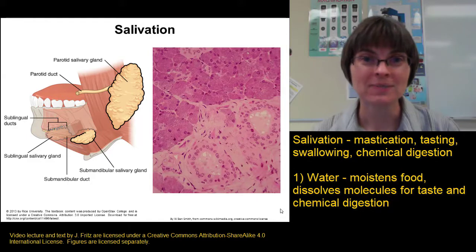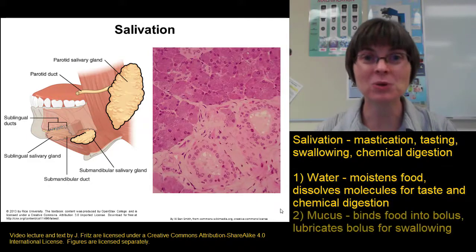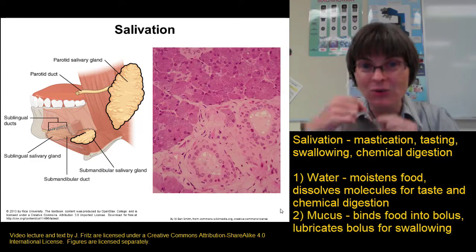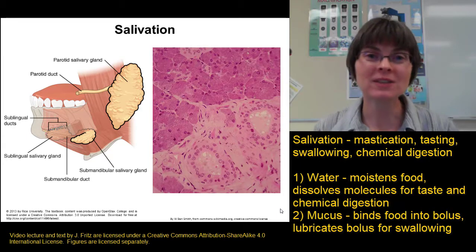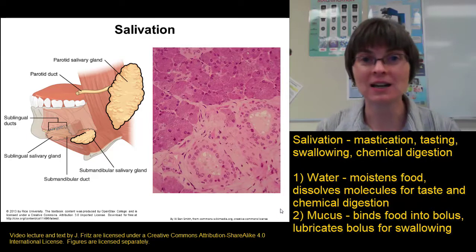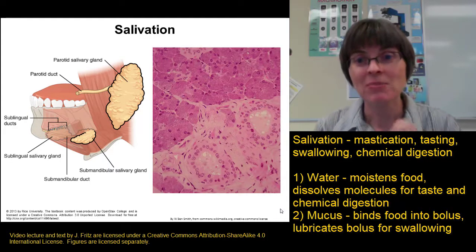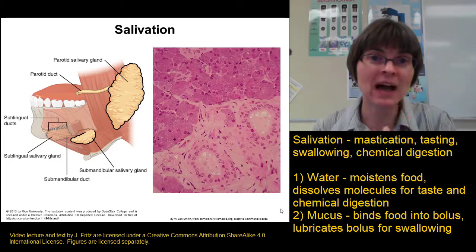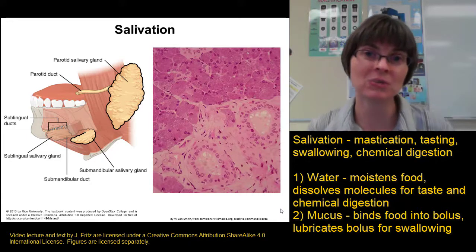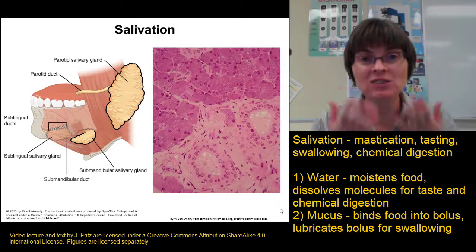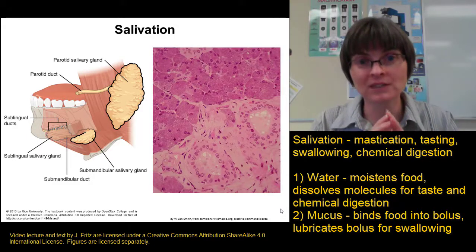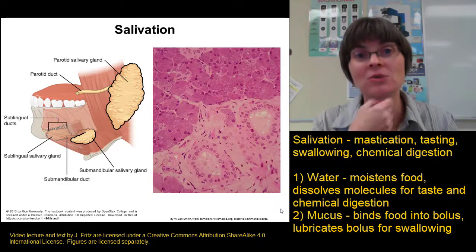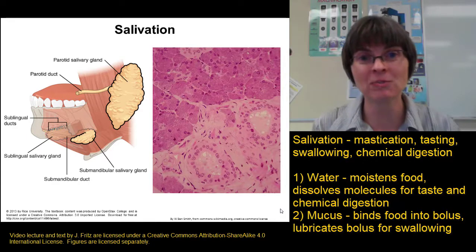In addition to water, saliva contains mucus — which is why saliva forms strands instead of drops. The mucus provides lubrication for swallowing and binds food together into a lump called a bolus. You can't swallow food that's dispersed through your mouth; it must be formed into a lubricated bolus, and the mucus helps form that bolus.